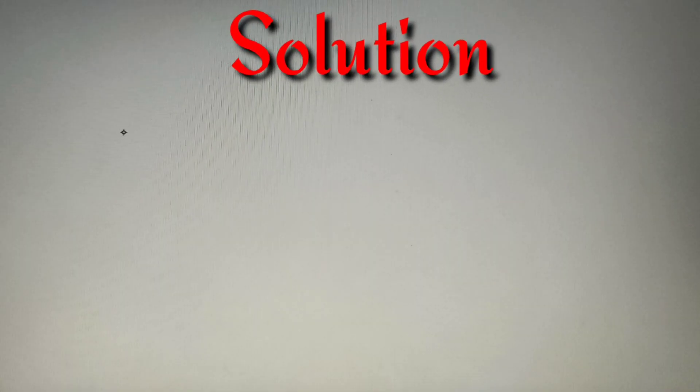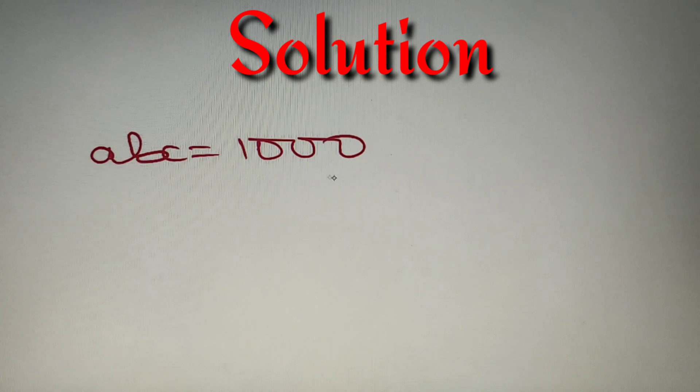I hope that you've tried the question. If you didn't get the solution, let's check it. According to the given question, A into B into C equals 1000, and we have to find the number of ordered triplets such that A, B, C are positive integers.